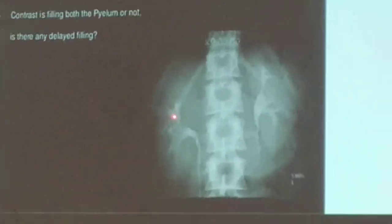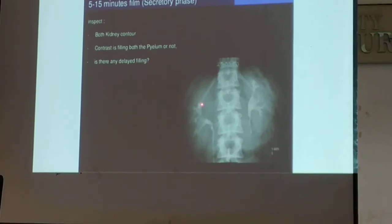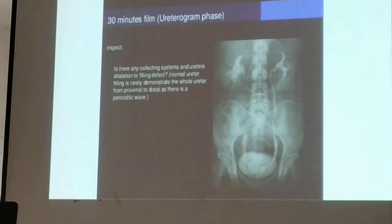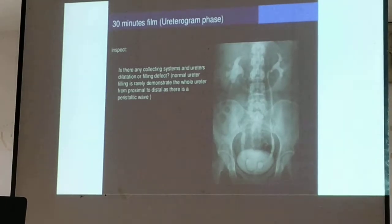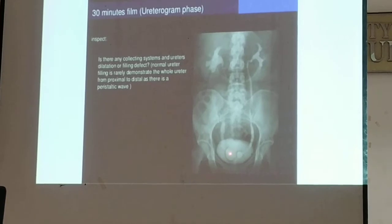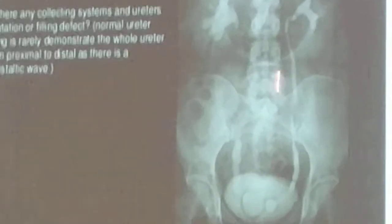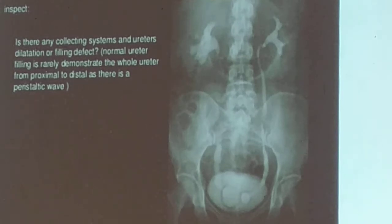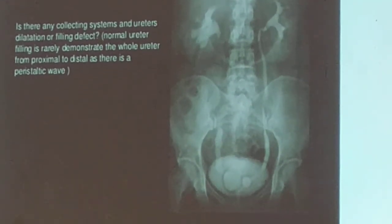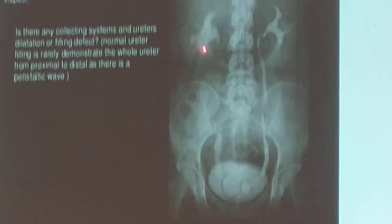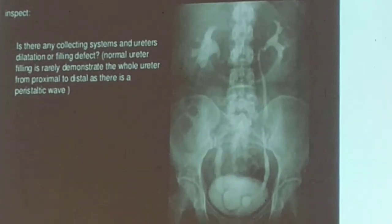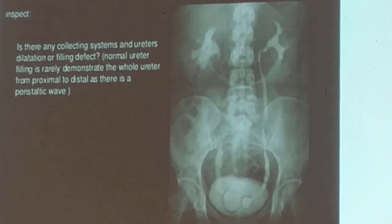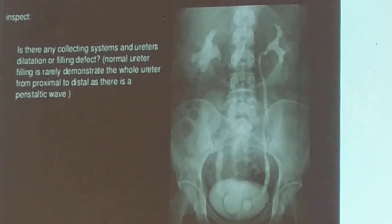The ureter is seen segmentally because of peristalsis — contract, dilate, contract, dilate. So that's the shadow of your right kidney going down. You should not try to say that this is a staghorn calculus, because you're now looking at a filled system — this is a special procedure, this is an IVP. How would you know this is an IVP? Normally in your plain KUB, you will never visualize your ureters and your urinary bladder.